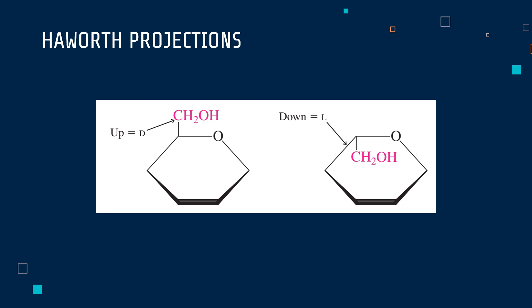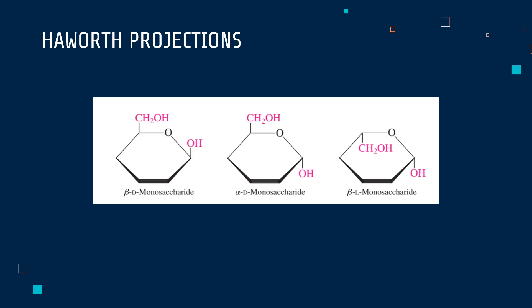The D or L form of a cyclic monosaccharide is determined by the position of the terminal CH2OH group on the highest numbered ring carbon atom. So in the D form, this group is positioned above the ring. In the L form, the terminal CH2OH group is positioned below the ring. The alpha or beta configuration is determined by the position of the OH group on carbon 1 relative to the CH2OH group that determines D or L monosaccharide. So in a beta configuration, both groups point toward the same direction, either both upward or both downward. The alpha configuration has the two groups positioned in opposite directions.